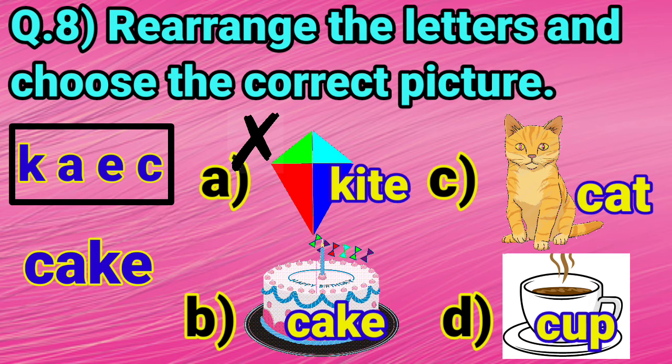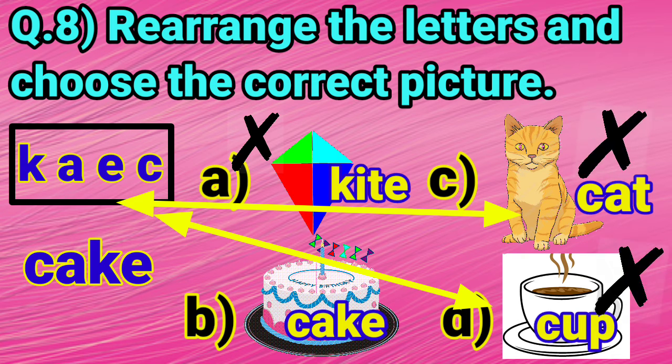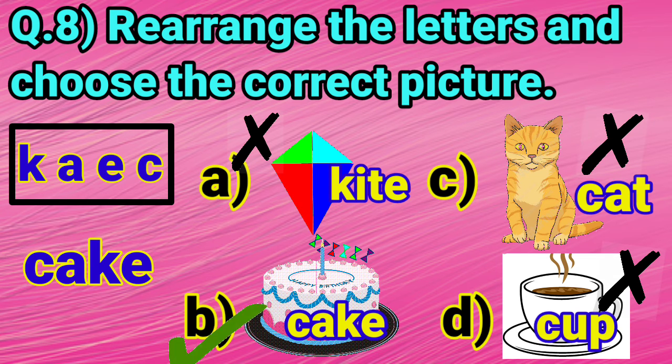Now, we will consider option C and option D. Dear children, look carefully. There are three letters each in option C and option D. But, the given letters are four in number. So, option C or D cannot be correct. The correct answer is option B, cake.